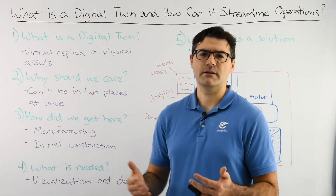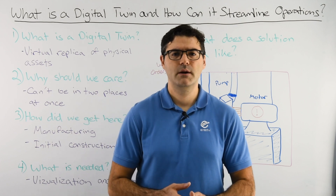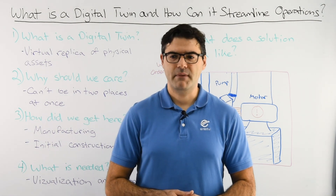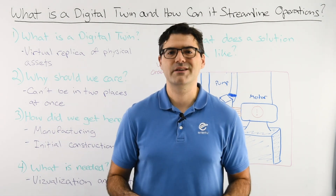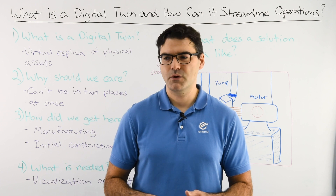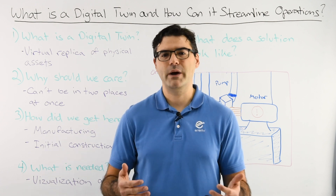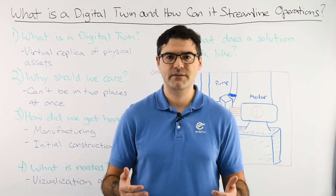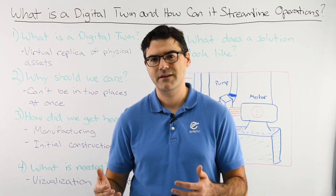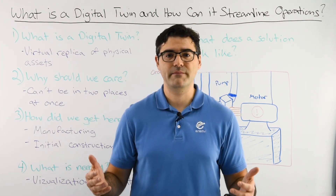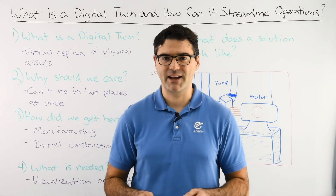So how do we get here? How is it currently being applied? One example is manufacturing. When you build the next generation jet engine or a new wind turbine, you need to evaluate it under various different types of circumstances and conditions in a cost-effective manner. Digital twins enable that.